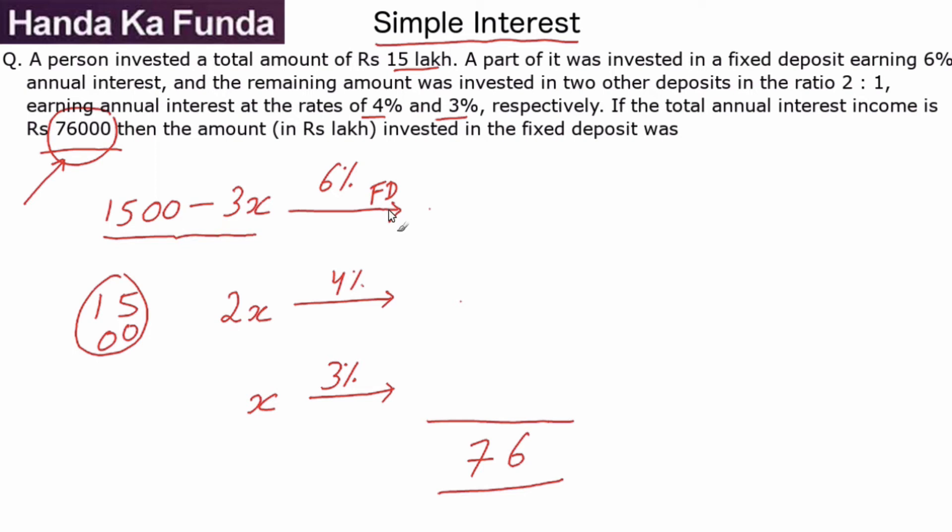So this is 1,500 thousand minus 3x which went in FD, 2x thousand went at 4%, and x thousand went at 3%. Now let's see what are my returns.